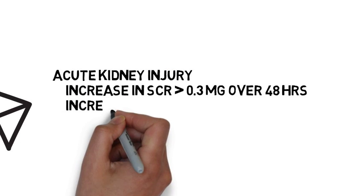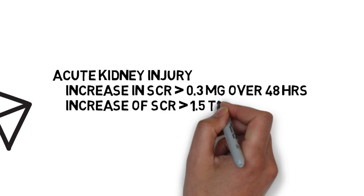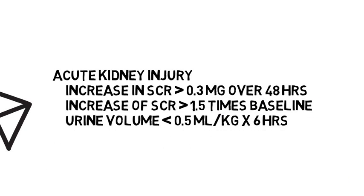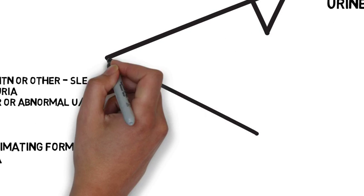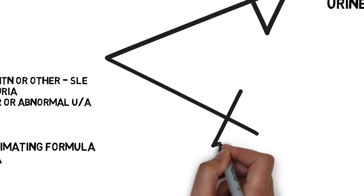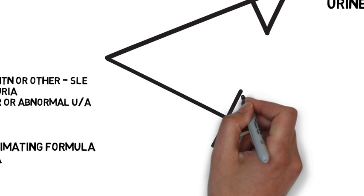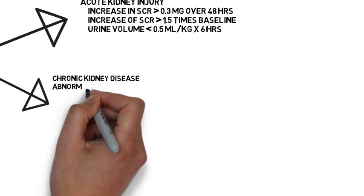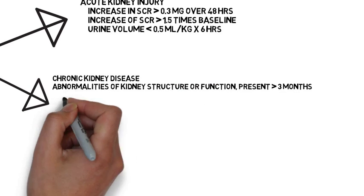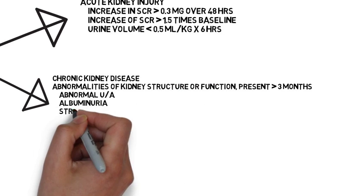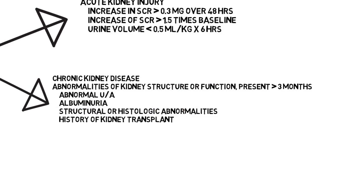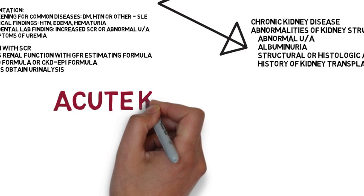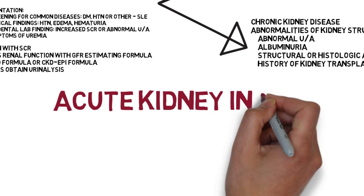Kidney disease itself can be divided between what's acute, which is shown with an increase in serum creatinine over 0.3, or you can have chronic kidney disease defined as greater than three months with functional abnormalities. Certainly the most important thing is knowing what the baseline kidney function is and whether there was a change.